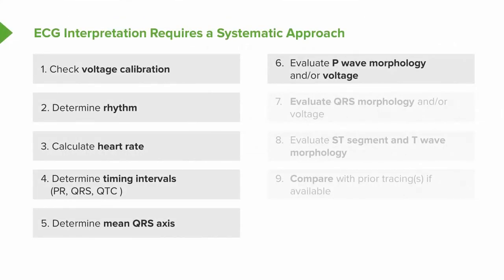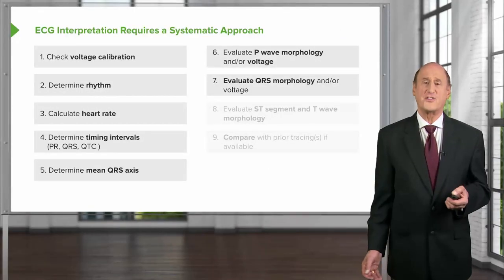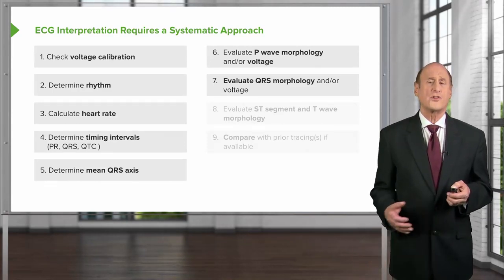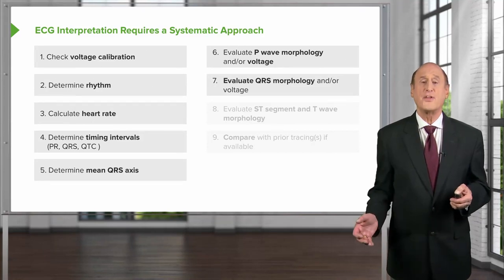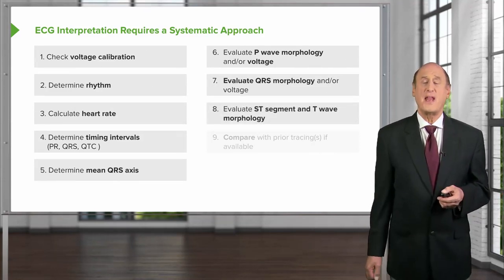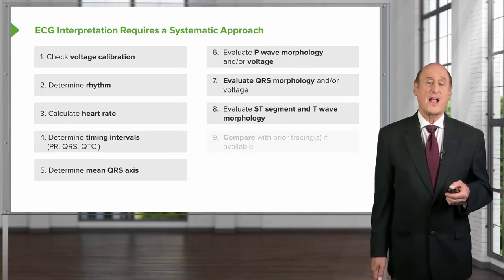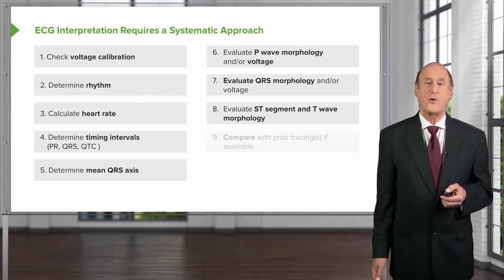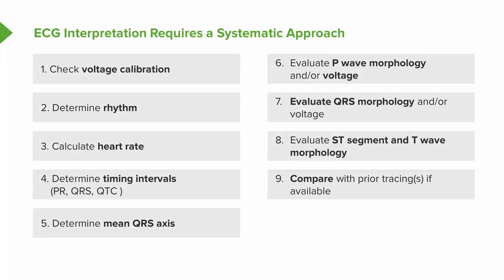We look at P wave morphology — its voltage and shape — because certain abnormalities can occur with certain diseases. We do the same for QRS morphology; heart blocks and conditions leading to pacemakers will change QRS morphology. We then look at the ST segment and T wave morphology, since ischemia — lack of blood flow that can lead to angina or heart attacks — changes these. If we have an earlier baseline EKG, we compare it to see if there have been changes suggesting something acute.